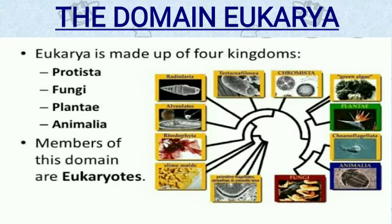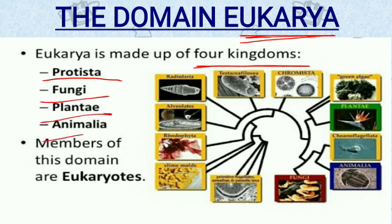Next, the domain Eukarya. We have already studied two domains — Archaea and Bacteria. Now the third domain is Eukarya. Four kingdoms come under Eukarya: Protista, Fungi, Plantae, and Animalia. We will cover all these kingdoms in the upcoming lectures. Members of this domain are eukaryotes — they have a well-developed nucleus present in cells, and they have well-developed cell organelles such as mitochondria, Golgi apparatus, vacuoles, and lysosomes. All these cell organelles are present in their cells.